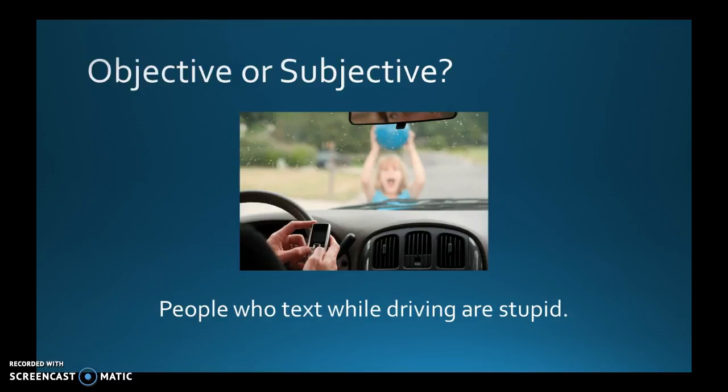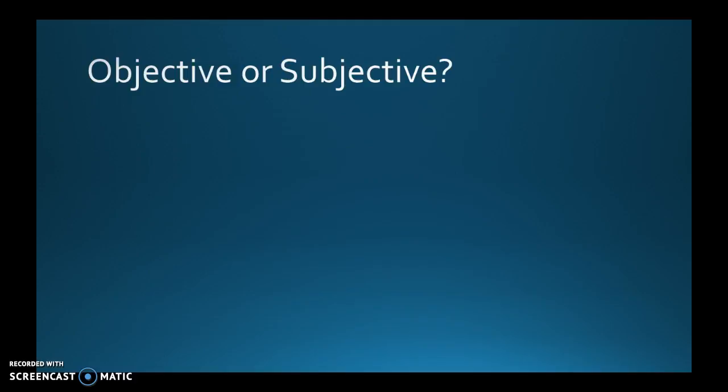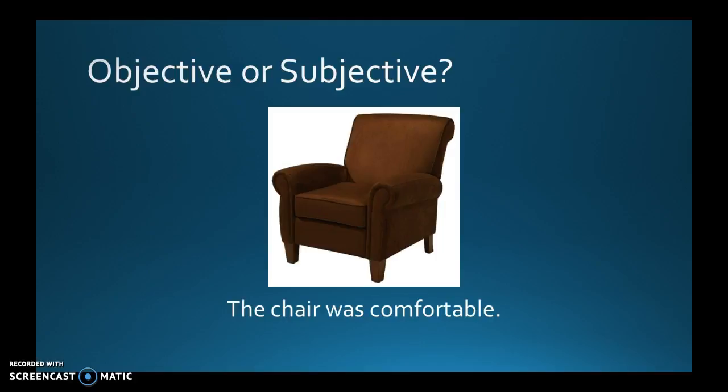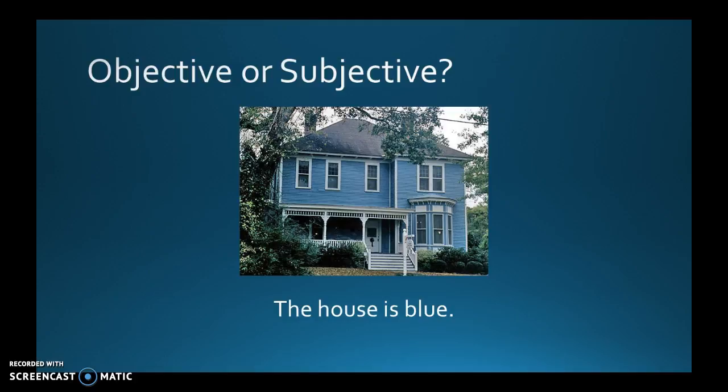Alright, let's go over the answers. 'The chair was comfortable' — that is subjective because it depends on your personal opinion. That chair may be comfortable to some people and not to others. A brown chair is objective, but comfort is a matter of opinion. 'The house is blue' — that is objective. It doesn't depend on your opinion or feelings; it just is what it is.